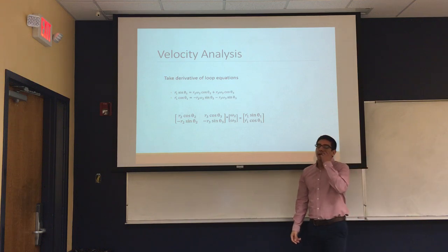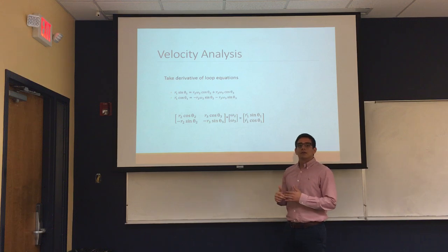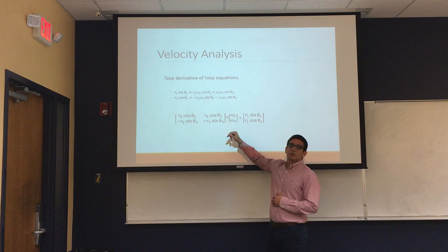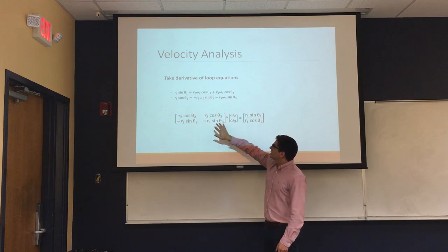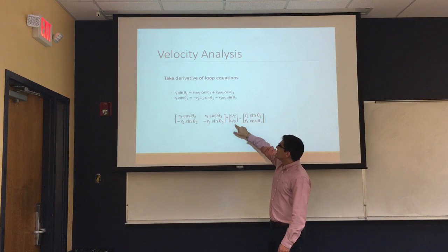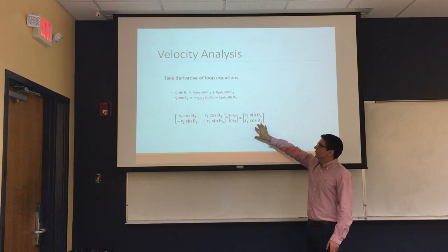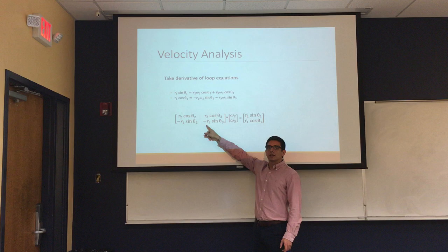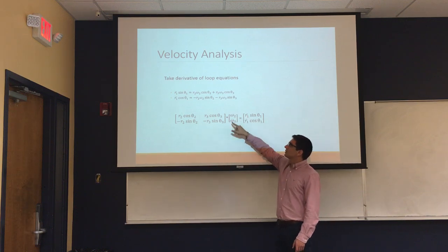Now, for the velocity analysis, we would take the loop equations and take the derivative of them, where we get these two equations. And then after this, we would solve this as a matrix, where you would then have this matrix times the unknown, which is omega2 and omega3, equals this known variable. Now with this, we would then take the inverse of this matrix, and then multiply it by this matrix, and that would give us our two values.